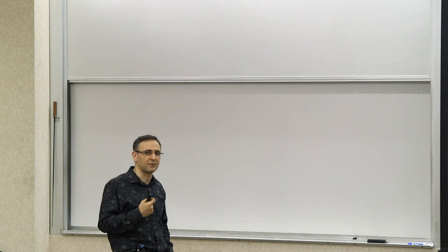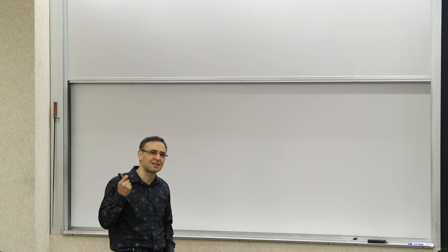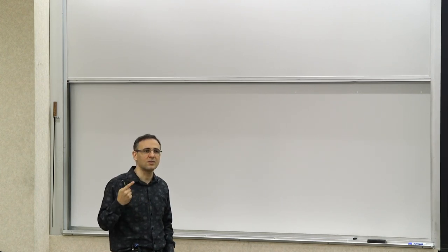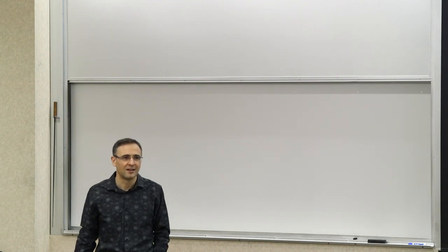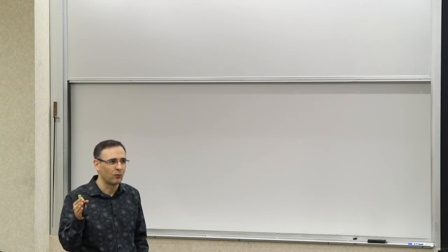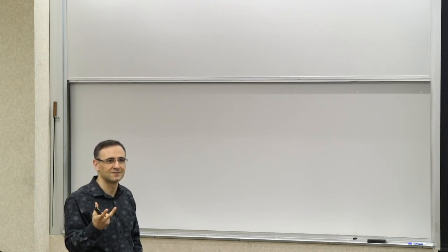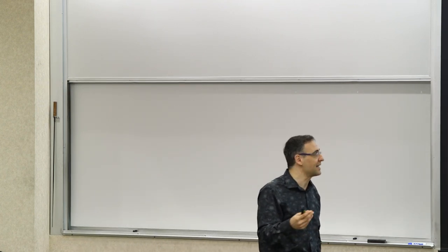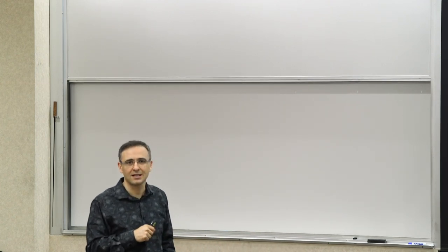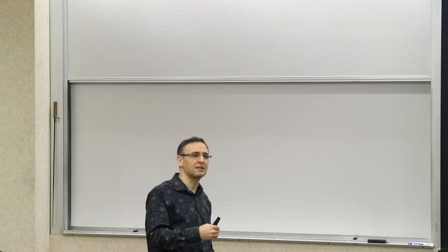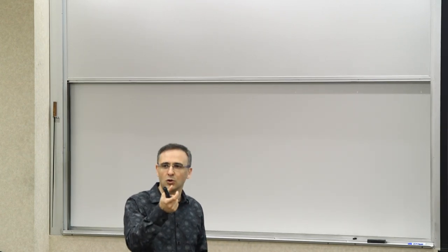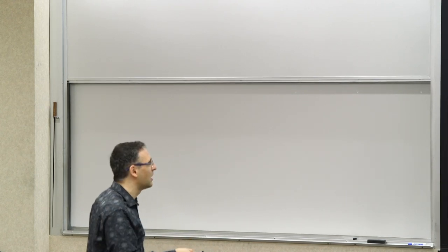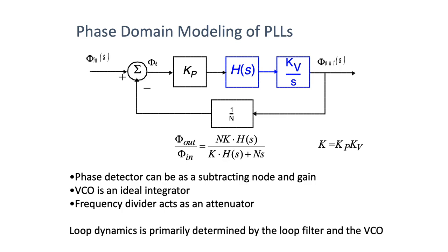The simplest way to see why the VCO is an ideal integrator is the impulse response model: the impulse response was a step, which corresponds to an ideal integrator. Then you have the frequency divider: in the phase domain, if you look at the argument of cos(ω₀t) when dividing, you also divide the phase — it becomes a scalar 1/N. So in phase domain, the PLL reduces to a linear system. For an arbitrary loop of Nth order, the transfer function is N·k·H(s) / (k·H(s) + N·s), where k is the product of the phase detector gain and the VCO gain.